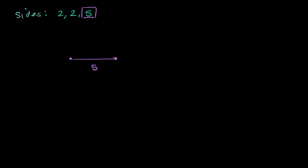And now let's try to draw the sides of length 2. Every side on a triangle obviously connects with every other side. So that's one side of length 2, and then this is another side of length 2.